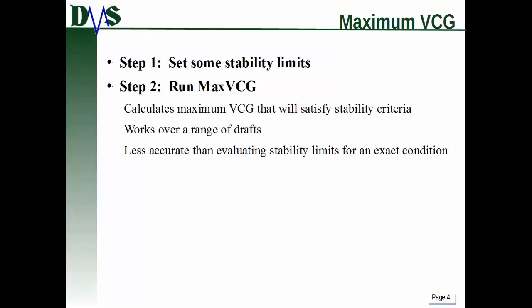There is a catch: this is less accurate than evaluating stability limits for an exact loading condition. The reason is how GHS actually performs the max VCG search. It starts with a maximum VCG set pretty high, then brings it down by a fixed step size, checking each time whether you pass all the limits, and stops when you no longer pass. Because of that fixed step size, it's a little less accurate — and that's the chief complaint most people have against max VCG in GHS.